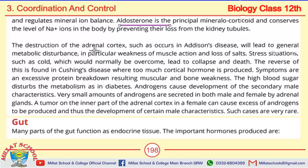Then we have aldosterone, which is basically a mineralocorticoid that conserves sodium levels. If the adrenal cortex is destroyed, the resulting disease is Addison's disease. Conversely, if the adrenal cortex secretes excessively, the resulting disease is Cushing's disease.